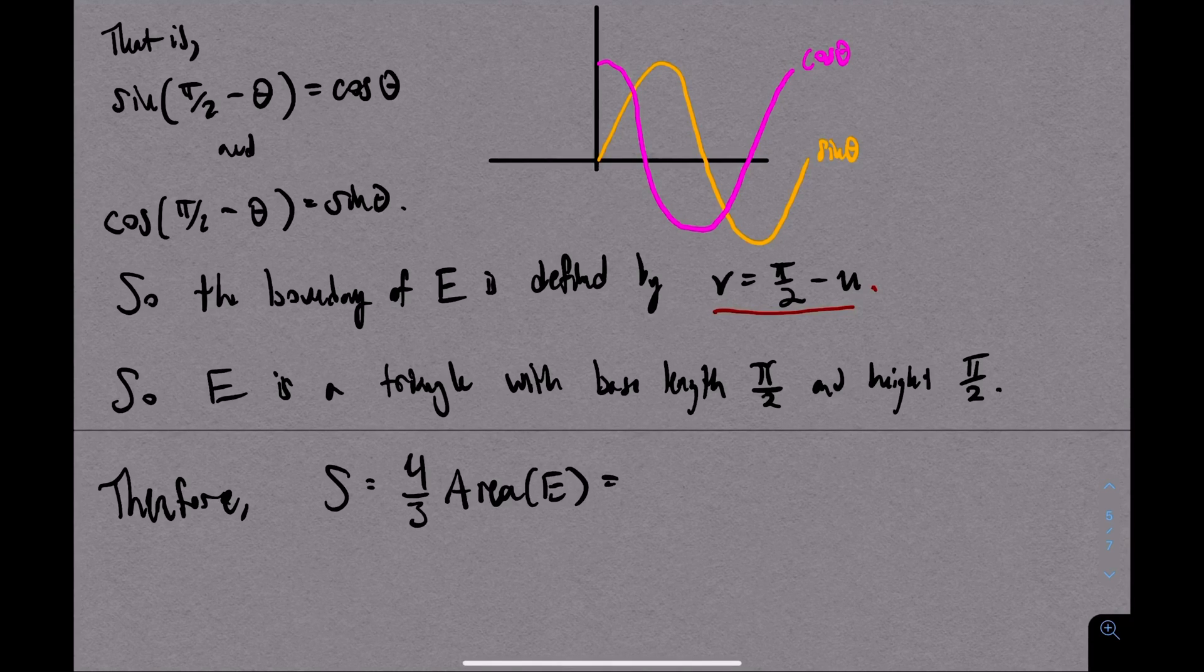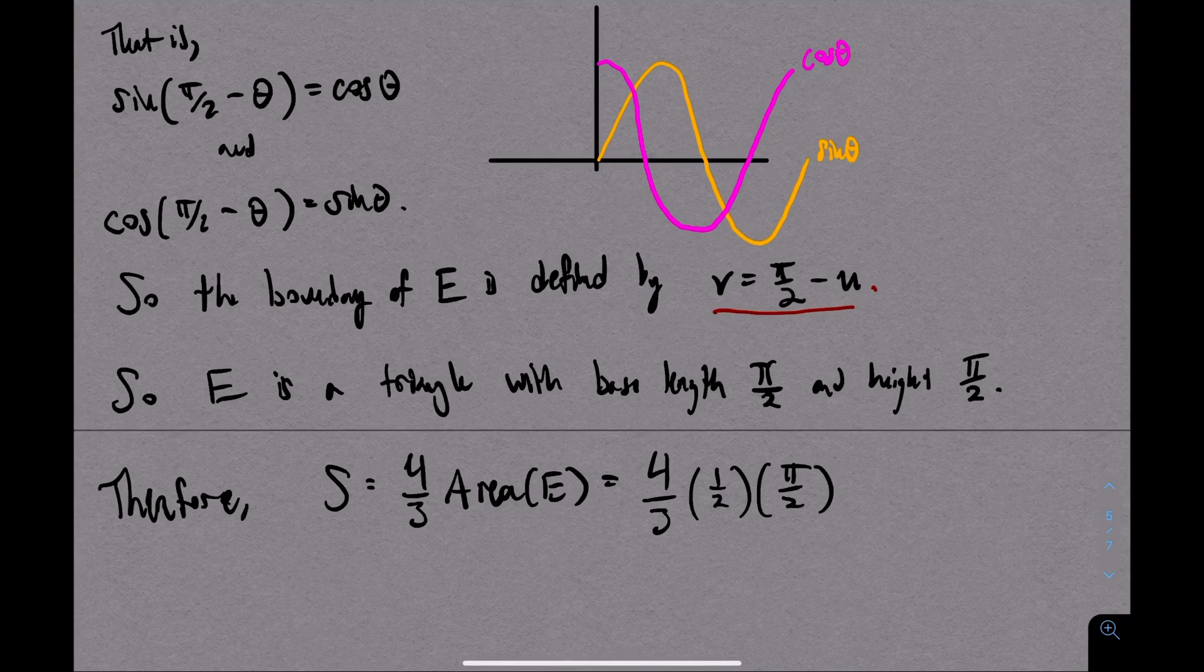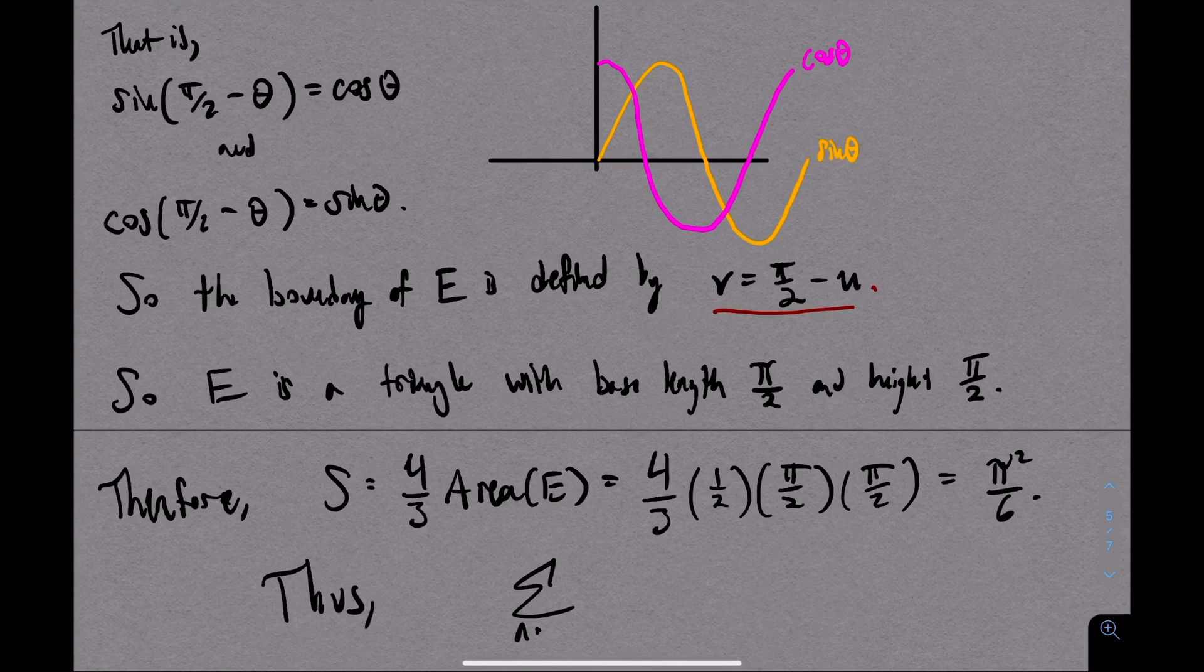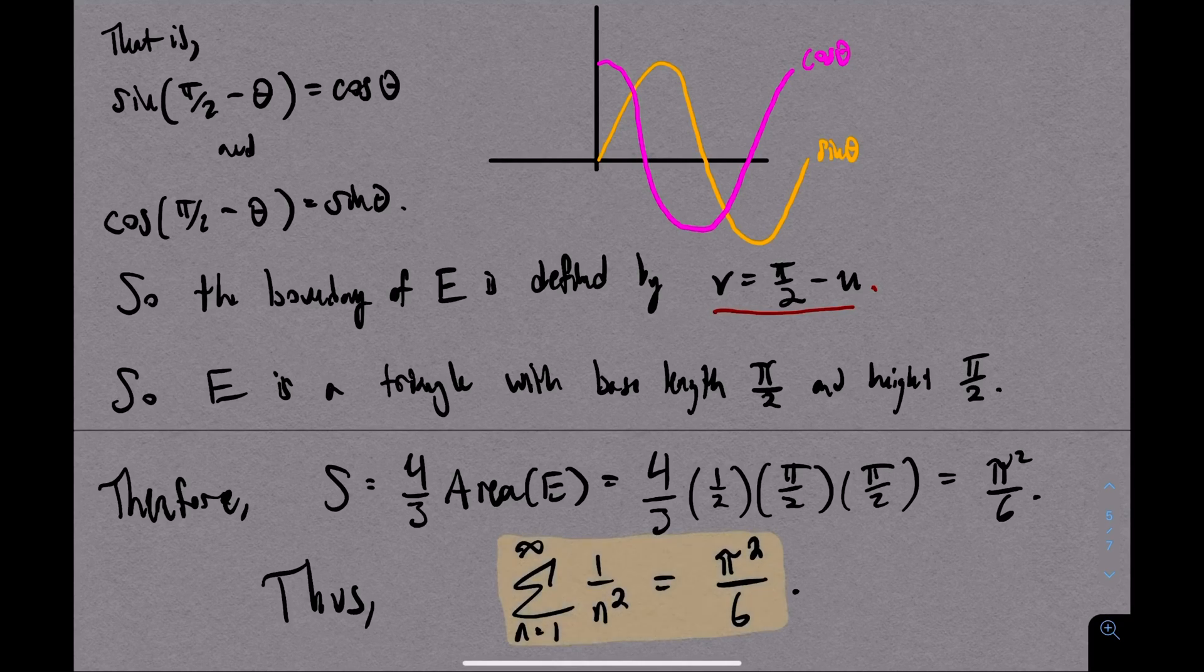The sum that we're interested in is 4 thirds times the area of e. E is a triangle. How do you compute the area? 1 half base times height. So we take 4 thirds times 1 half times the base is pi over 2. The height is pi over 2. Do some simplification. We get pi squared on top. 2 of the 2's kill off the 4 in the numerator and we're left with 6 in the denominator. And look at that. We just solved the Basel problem with a double integral.